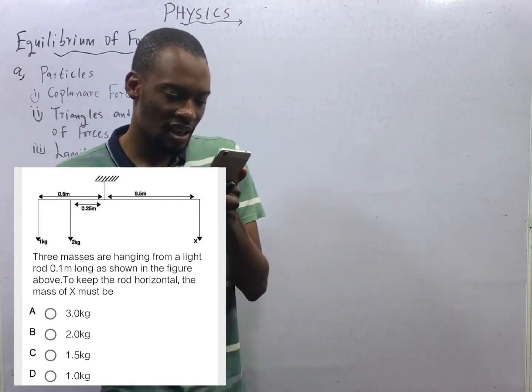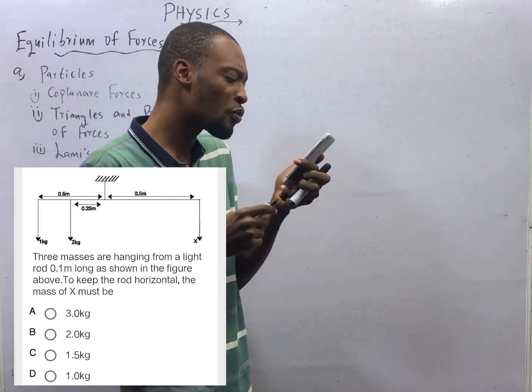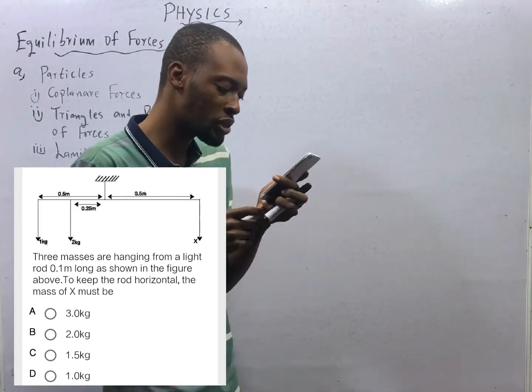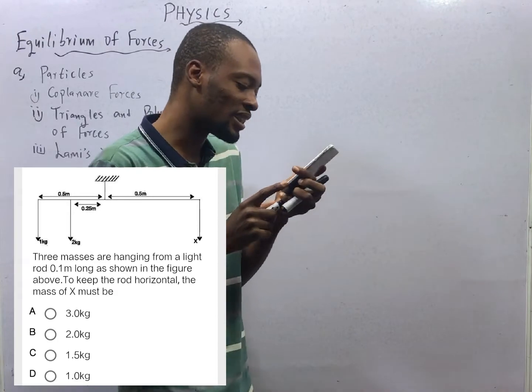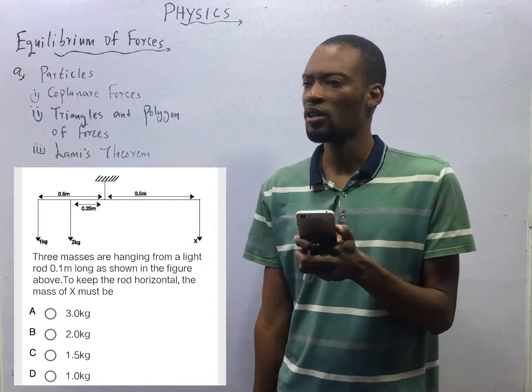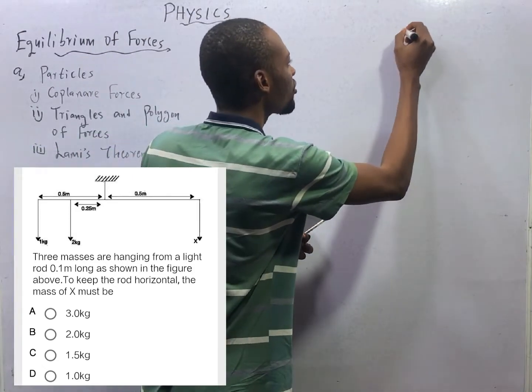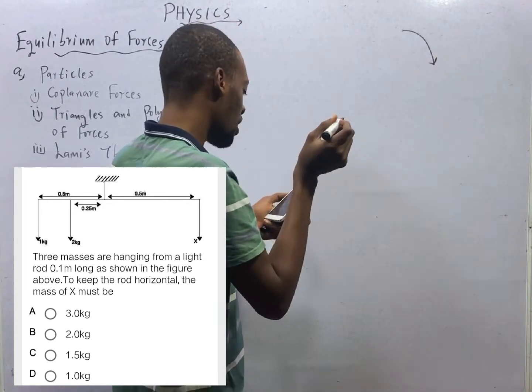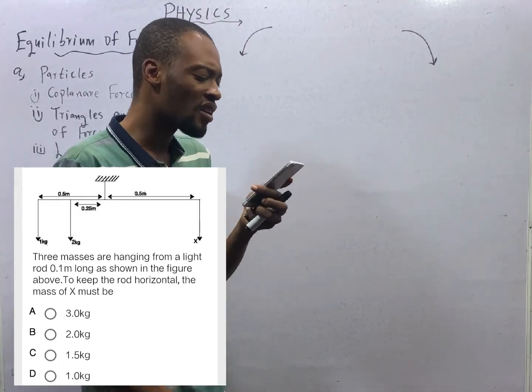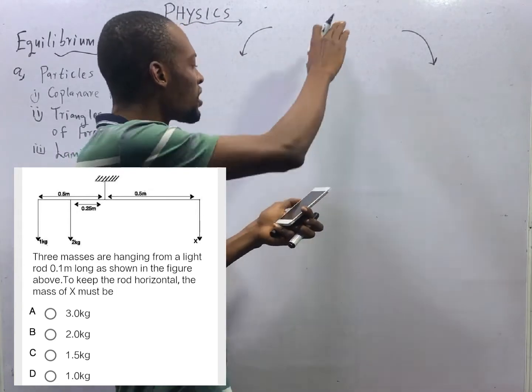We are given three masses hanging from a light rod. The total length of the rod is 0.1 meter, that is 0.5 plus 0.5. To keep the rod horizontal, the mass of S must be what? We are simply asked to find the moments difference about these points. S is trying to pull it clockwise and 1 kg and 2 kg are anti-clockwise. All the distances are perpendicular.